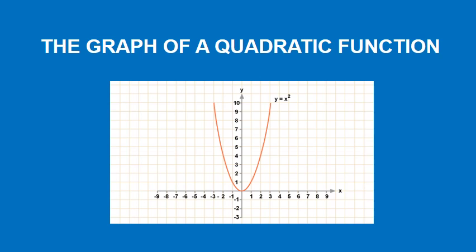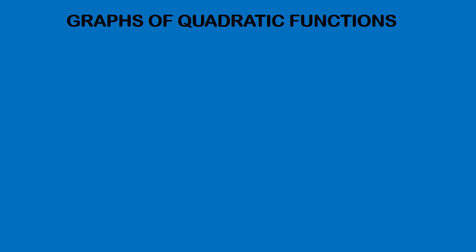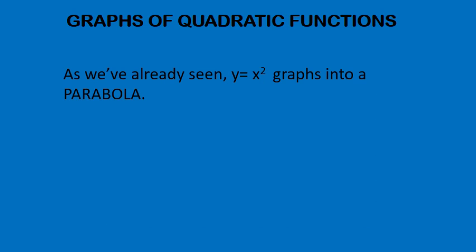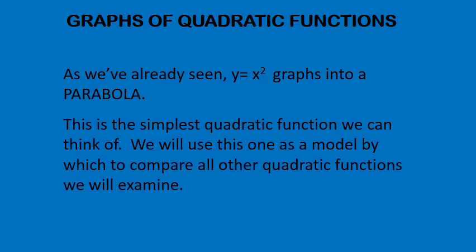In this video we're going to look at some graphs that are produced from quadratic functions. First thing we'll look at is that we've seen on the previous slide that y equals x squared gives us a parabola. And this is basically going to be our simplest one and it's going to be a reference point throughout the rest of this video.